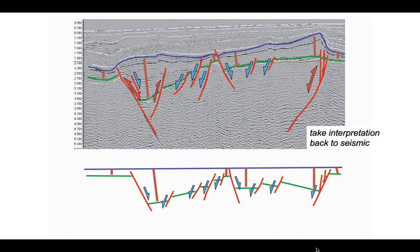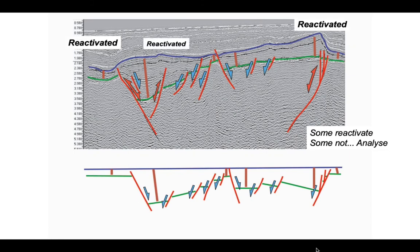The three faults we picked out in red double arrows have reactivated. They started life first as normal faults but have then replayed later after the deposition of the blue horizon as contractional reverse faults. Some faults have reactivated and some not. We're going to look in detail at two of them, the ones on the left and right.